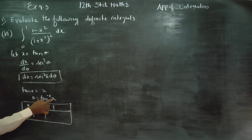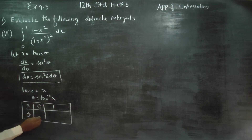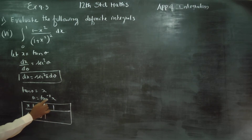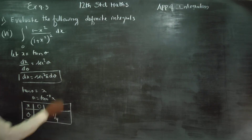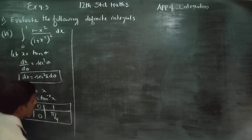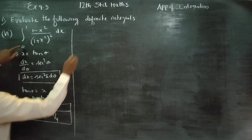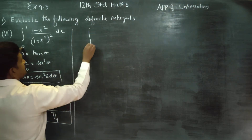Substitute x equals 0: tan inverse of 0 is 0. When x equals 1: tan inverse of 1 is 45 degrees, that is pi by 4. So the new limits in theta are 0 to pi by 4.